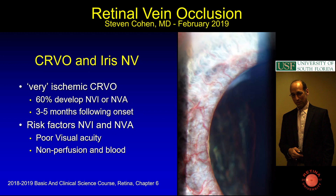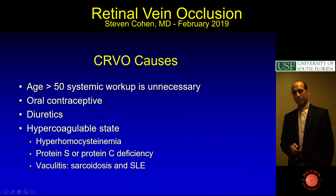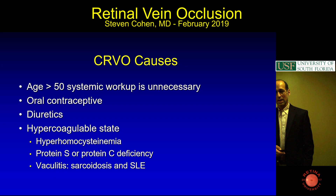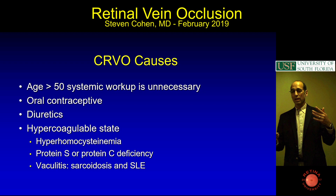You need to look for iris neovascularization. For causes: if the patient is greater than 50, extensive workup is usually unnecessary. You worry about oral contraceptives, diuretics, and hypercoagulable states. If someone has sluggish blood—hyperhomocysteinemia, protein S, protein C deficiency, vasculitis, sarcoidosis, lupus—these are listed in the basic academy book for central vein occlusion workup.